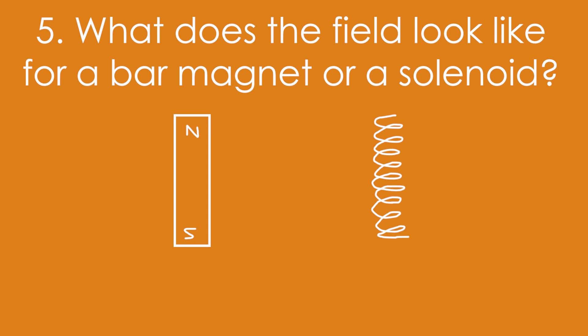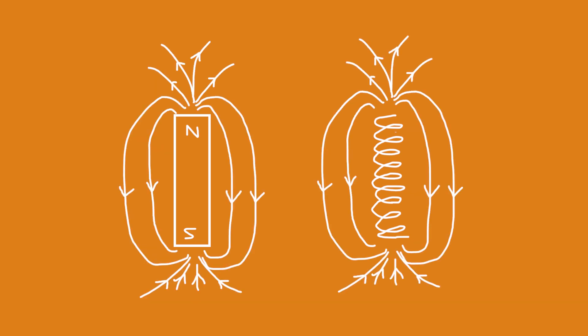Question 5: What does the field look like for a bar magnet or a solenoid? The field lines come out of the north pole and go to the south pole — they loop round. Of course, the field lines go inside both as well.